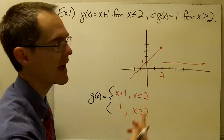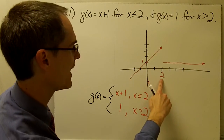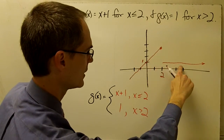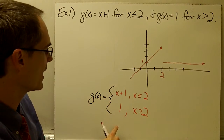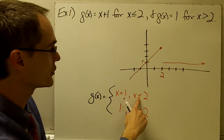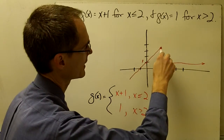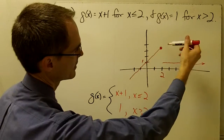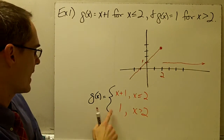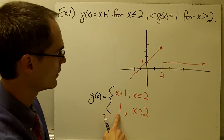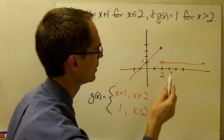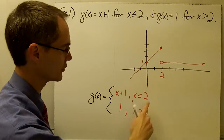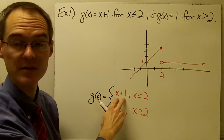Right here at x equals 2, you can see there's a big gap in the function. The question comes up: what's the value of the function when x equals 2? According to the way the function is defined, for x less than or equal to 2, the function is x plus 1. So this point right here I'm going to make a filled-in dot to make clear this is the value of the function when x equals 2. When x is greater than 2, the function equals 1, so I'll put an open circle here to indicate that for all values greater than 2 the function equals 1, but not when x equals 2 — because when x equals 2, it's defined as this piece.